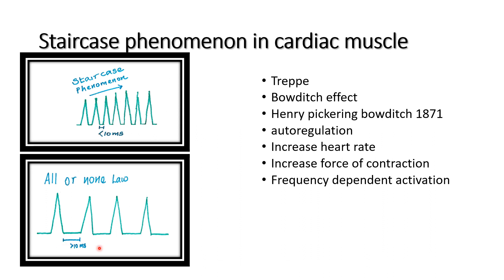For normal cardiac muscle, if you give stimuli with more than 10 milliseconds interval — normally around 20 milliseconds interval — it produces the all-or-none law. No matter how strong the stimuli, the heart responds with the same force of contraction at that level.